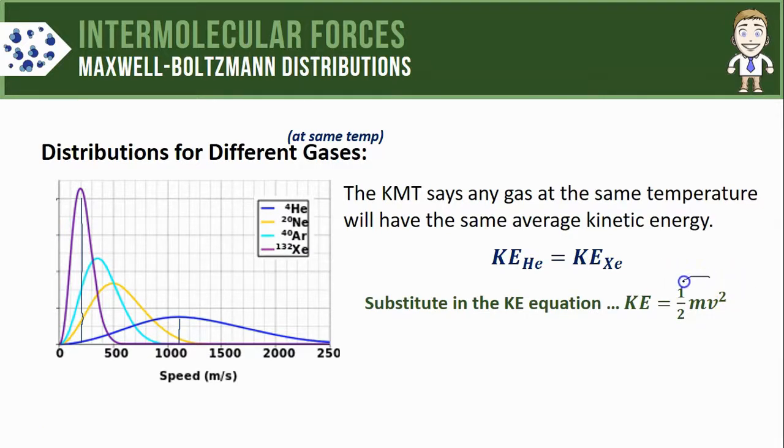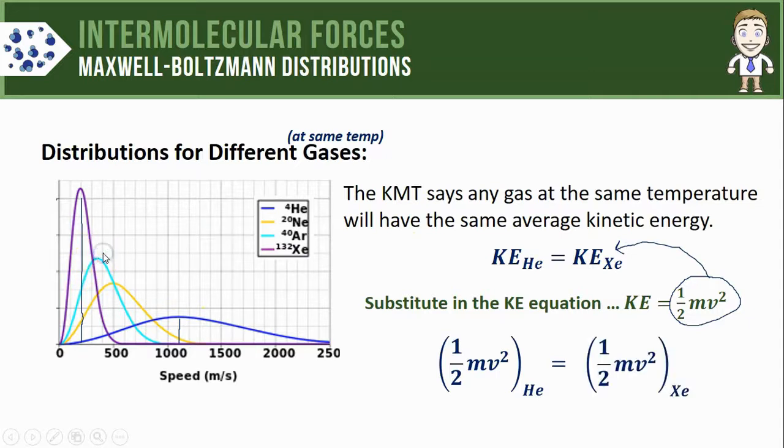one-half mv squared from the kinetic energy equation onto each side of this mathematical expression. So on the left-hand side I'll have one-half mv squared for my helium atoms, and on the right side one-half mv squared for my xenon atoms. Now let's look at how the two sides of this equation are going to be different.